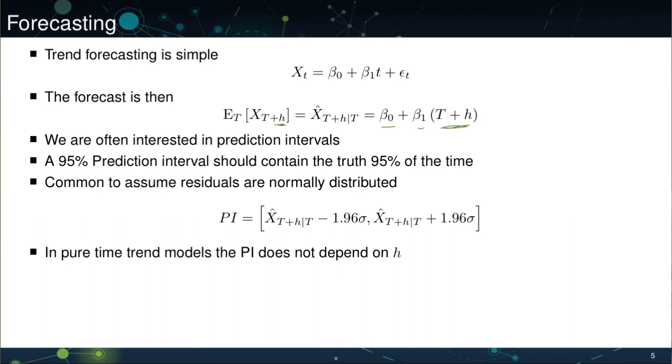A 95% prediction interval should contain the true value 95% of the time. Throughout this set of slides, we'll make a simplifying assumption that the residuals in the model are normally distributed. This of course lets us use the quantiles of a normal distribution. In the case of a time trend, the prediction intervals are particularly simple. They only depend on the forecast value, xt plus h, 1.96, which we know gives us the 95% quantiles, and then sigma.